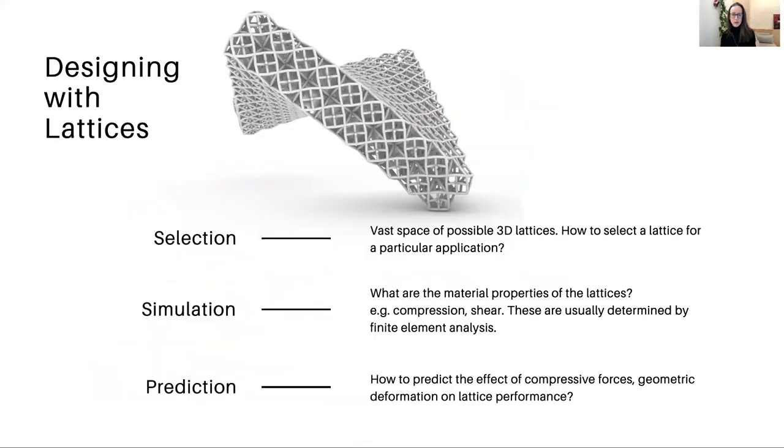So lattices turn out to be very useful in a range of applications, everything from the microscopic scale to the architectural scale. But there are challenges to designing with lattices. First of all, there's a vast space of possible three-dimensional lattices. It's infinite. How do we select a lattice for a particular application? Typically this is done by trying to identify the material properties you're interested in, things like resistance to compression or shear forces. This is usually done using some kind of simulation, perhaps finite element analysis, but that's non-trivial, especially on a form like this one. Design iteration therefore becomes very slow and it leads us to ask the question, is there a better way to do this?